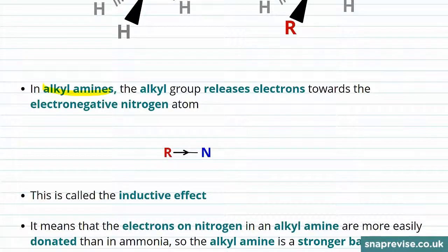Alkyl amines, which are ones with straight chains of carbon attached to the nitrogen, have an effect where the alkyl group releases electrons towards the electronegative nitrogen atom. So the nitrogen is effectively pulling on the electrons in the bond, and the alkyl group is easily donating them towards the nitrogen. This means that the lone pair of electrons on the nitrogen is much more readily donated, because it has this extra electron density donated from the alkyl bond.